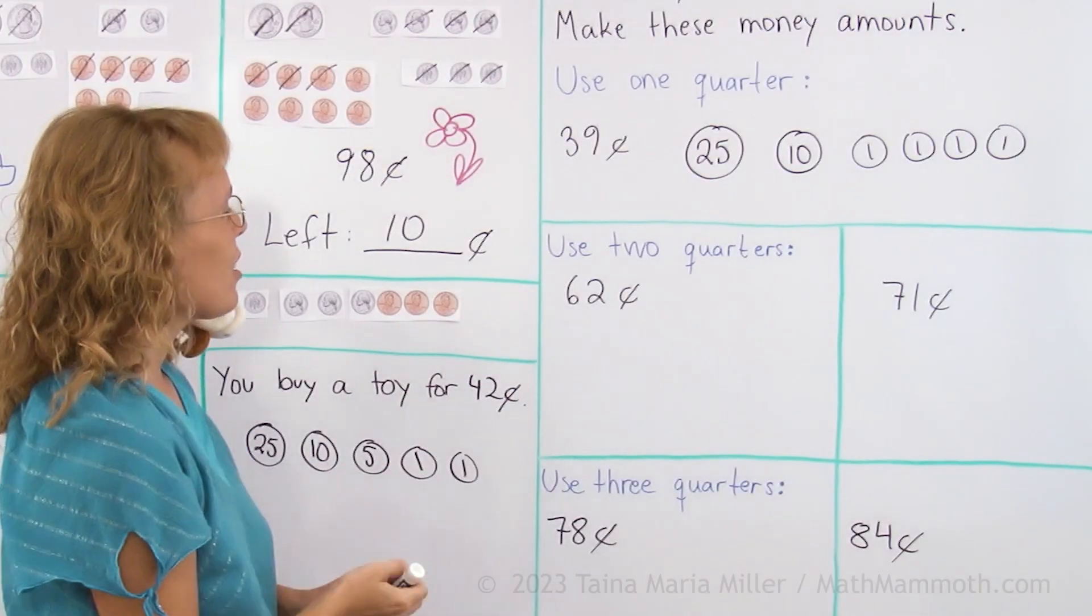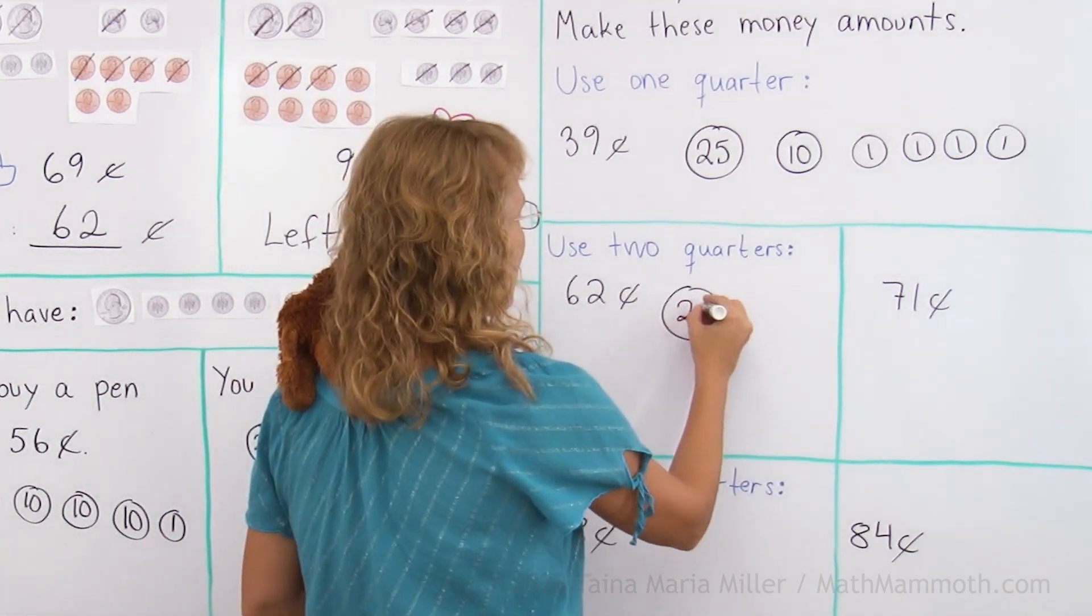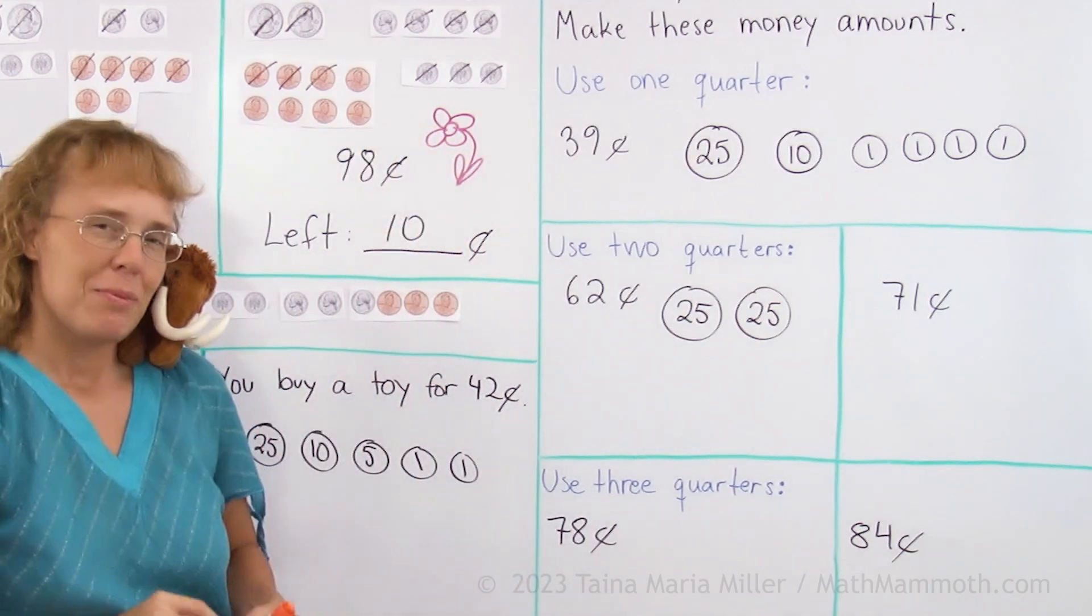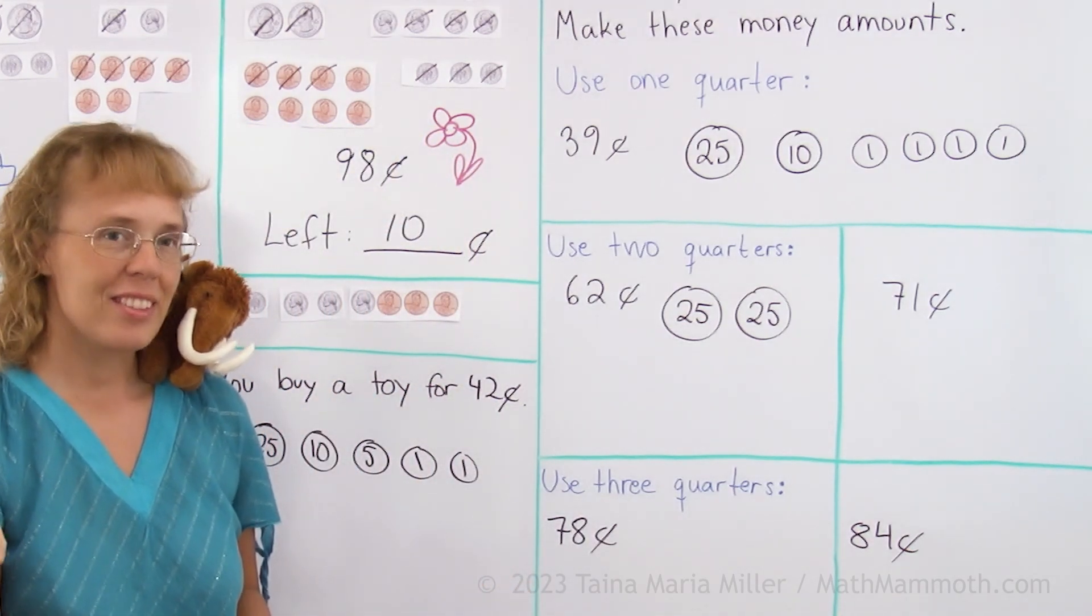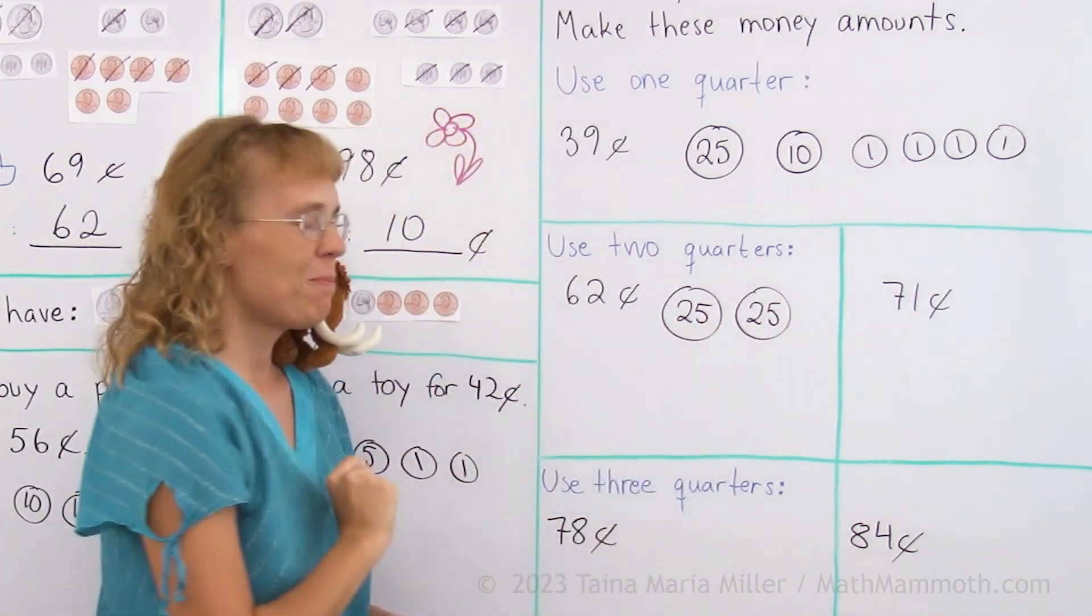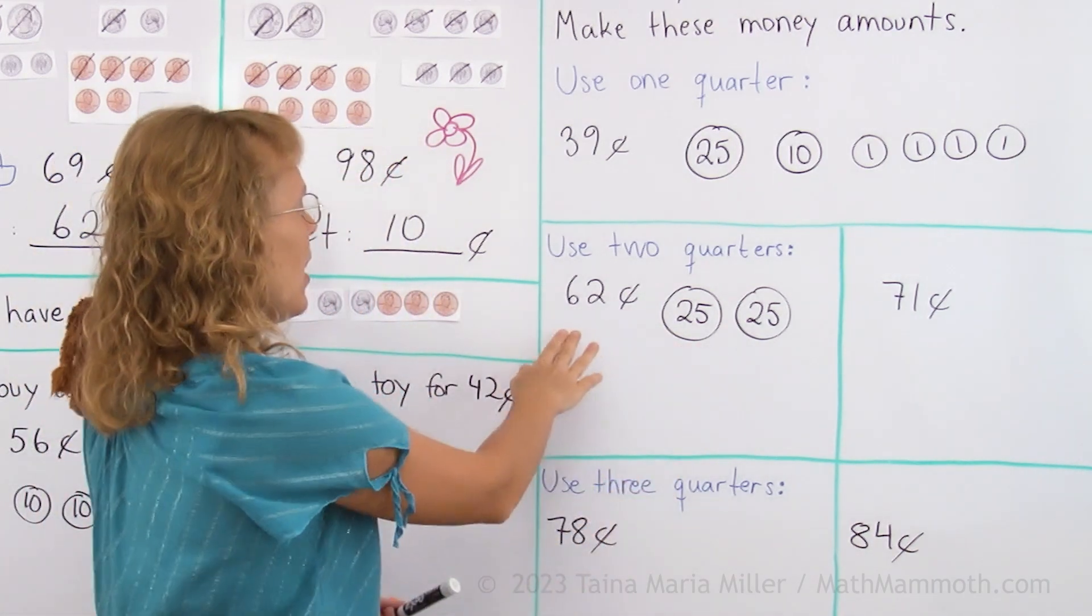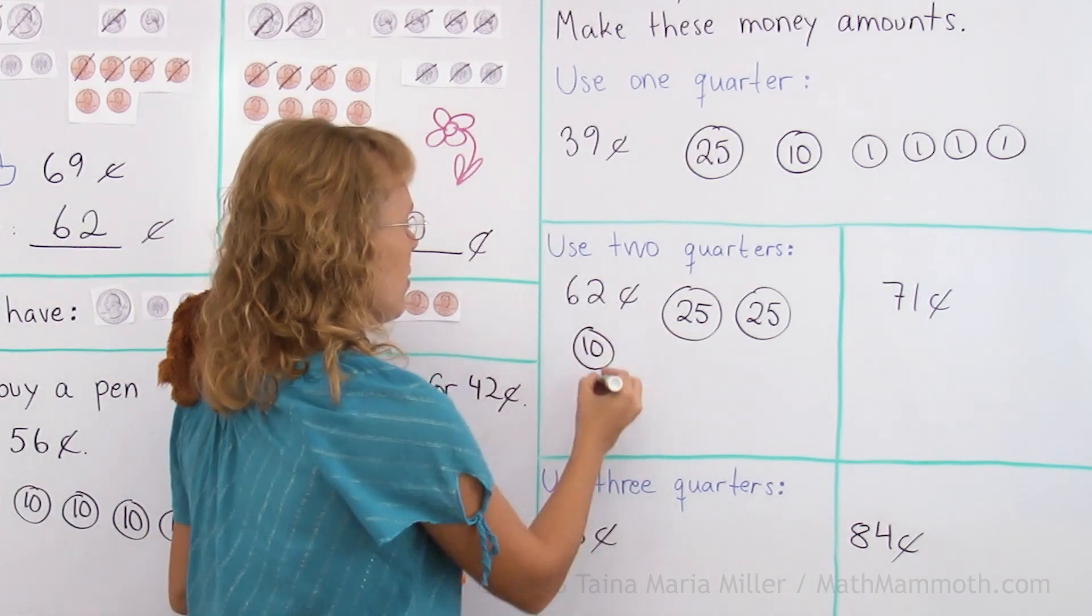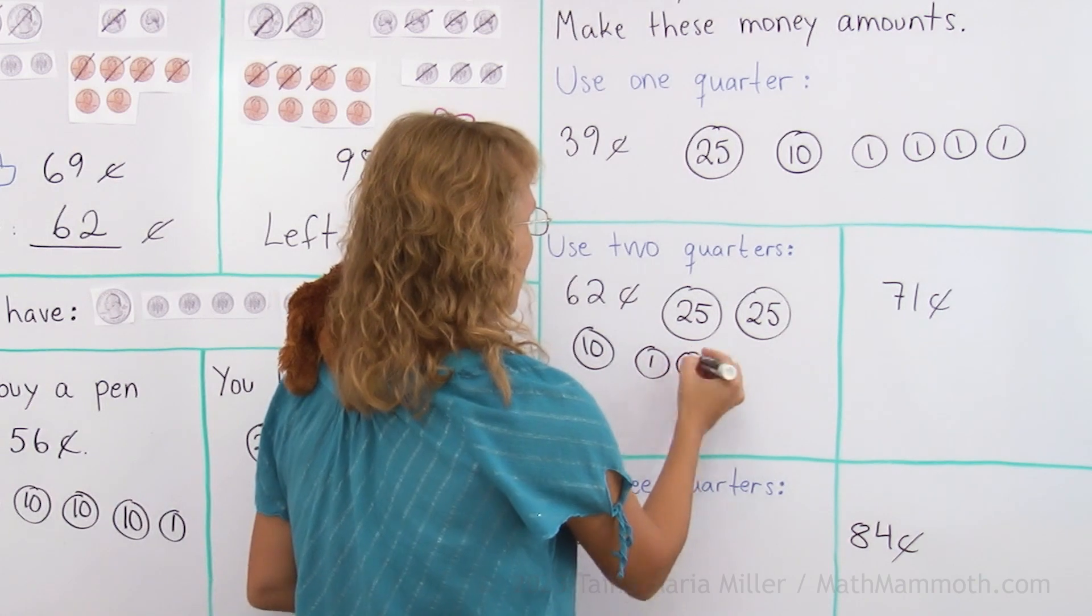Use two quarters for 62 cents. Two quarters, okay, that's a quarter and that's a quarter. How much did they make together? 25 and 25. Think of it as 20 and 20 making 40, 5 and 5 makes 10. So 40 and 10, 50, there's 50 cents there. I need 62, so 10 more, that's now 60, and then 2 more, penny and penny.